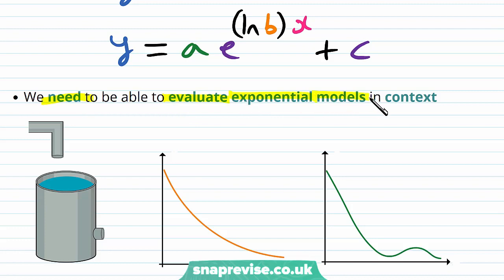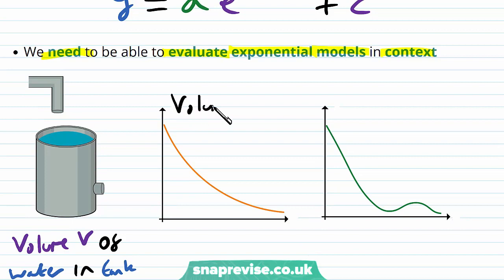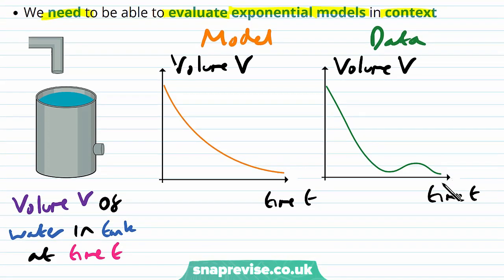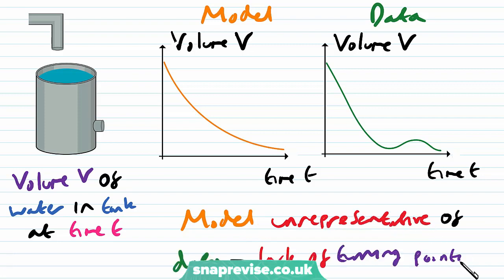We need to be able to evaluate exponential models in context. Let's say we examine the volume v of water in a tank at time t, and we plot v against t in two different cases. Case 1 corresponds to the model and case 2 corresponds to the actual data. Notice that there is a disparity: the model is unrepresentative of the data due to the lack of turning points. Our data has turning points, but our model does not, and therefore the model is unrepresentative of the data.